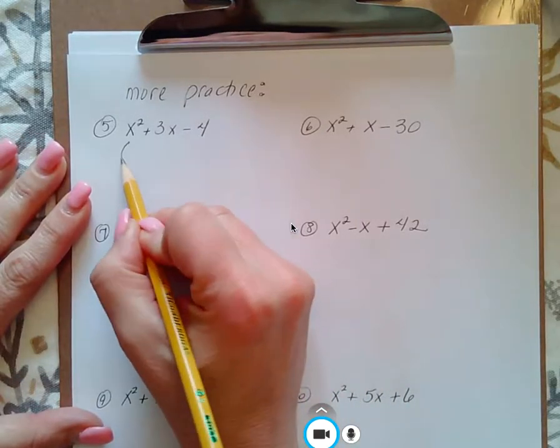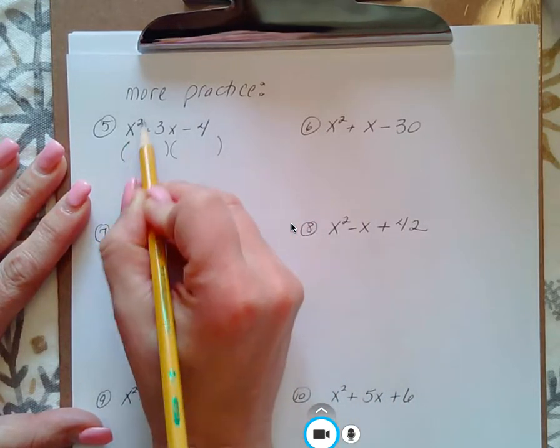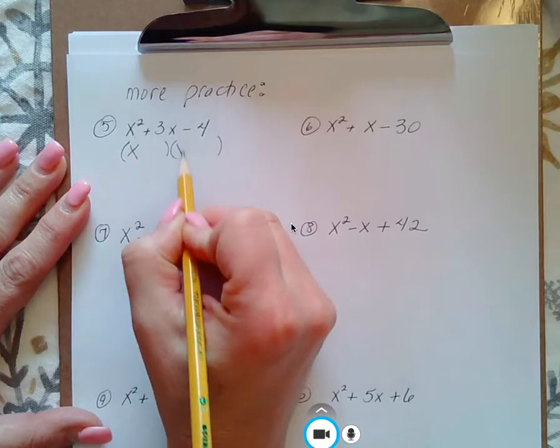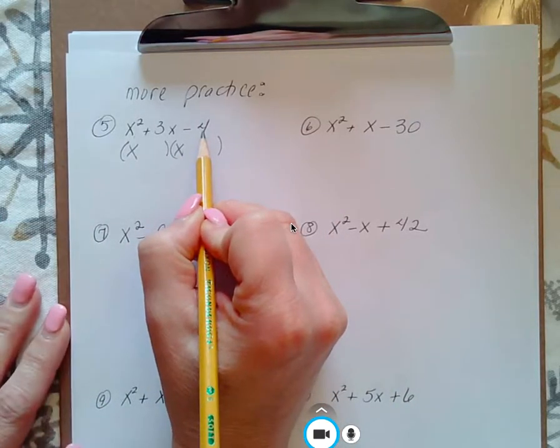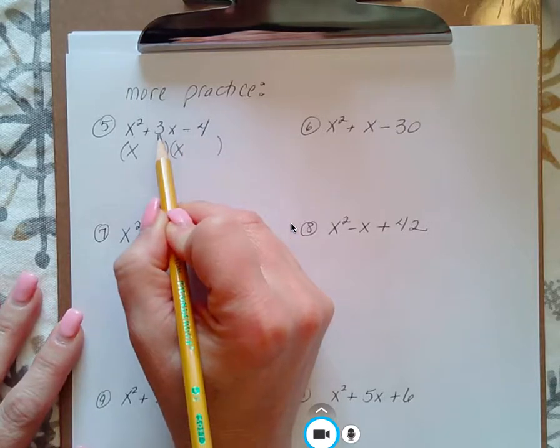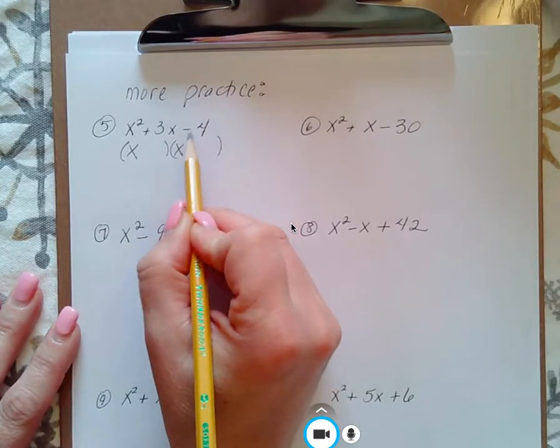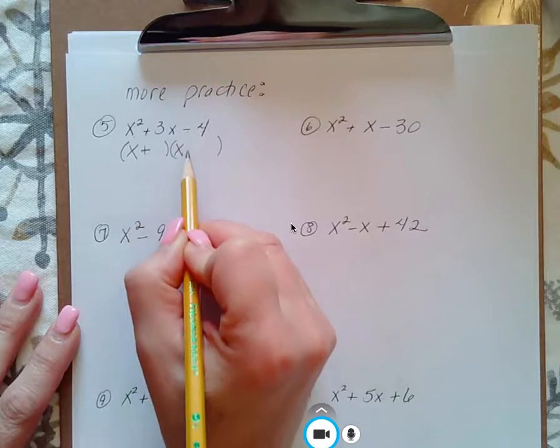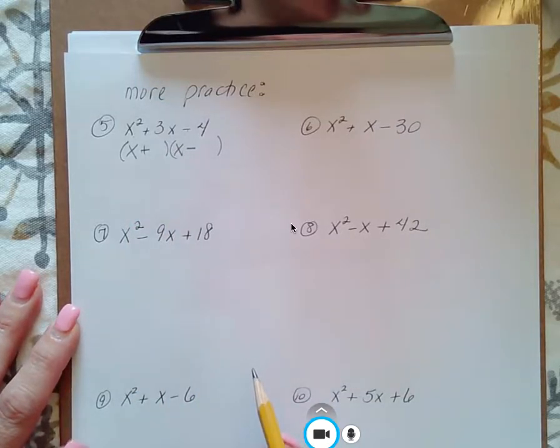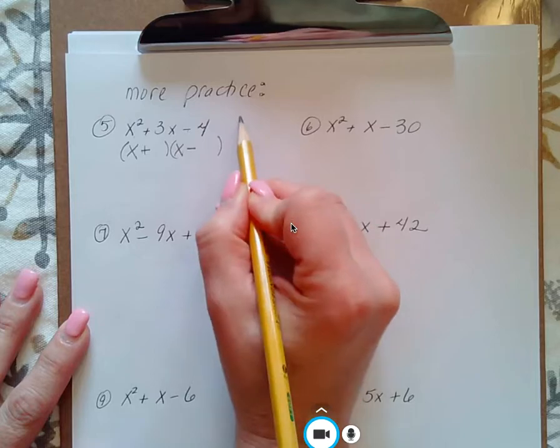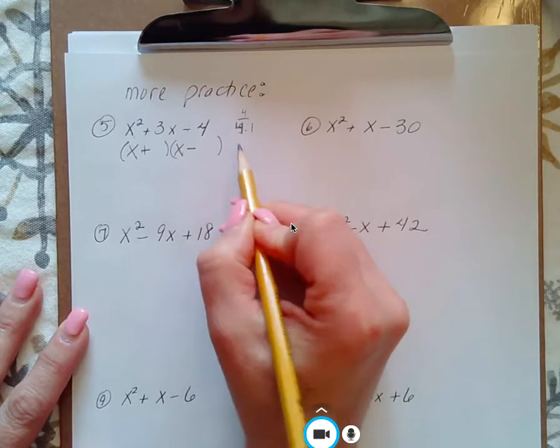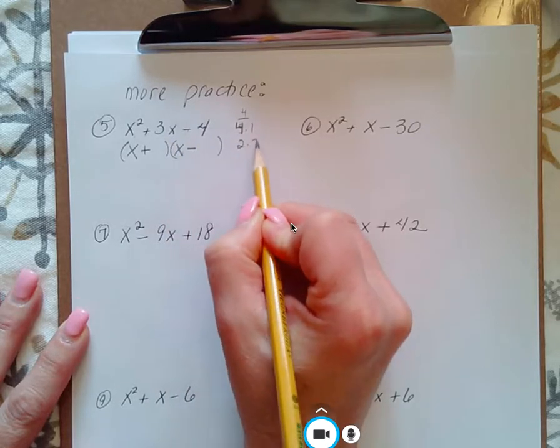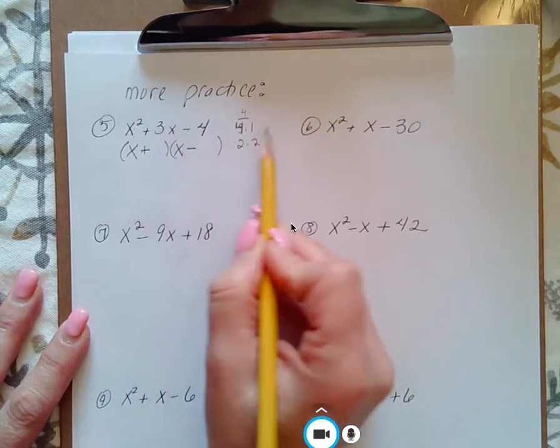So for number five, I always set myself up with two sets of parentheses. Whatever this variable is, it goes in the beginning of each. Multiply to get four, subtract to get three. Now again, we're multiplying actually to get a negative four, so I know I'm having to use both signs, a plus and a minus. Multiply to get four, so that's going to be a four and a one. I had that three in my head. And a two times two.